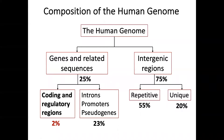The human genome is a complete set of DNA sequences of humans. We learned that we have more than 3 billion DNA base pairs in our genome. We also learned that we have DNA in both the nucleus and mitochondria, and they are named as the nuclear genome and mitochondrial genome, respectively.